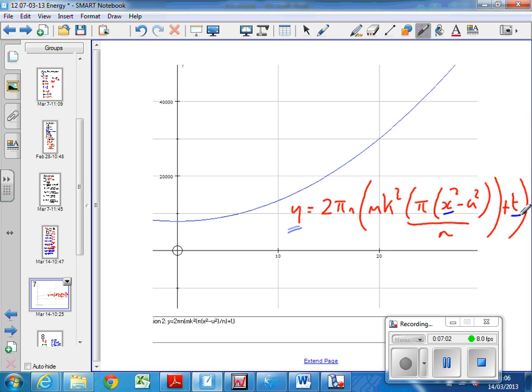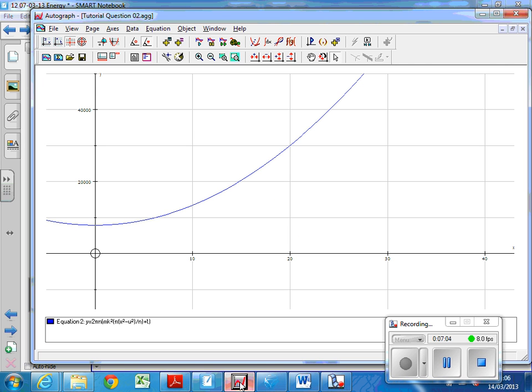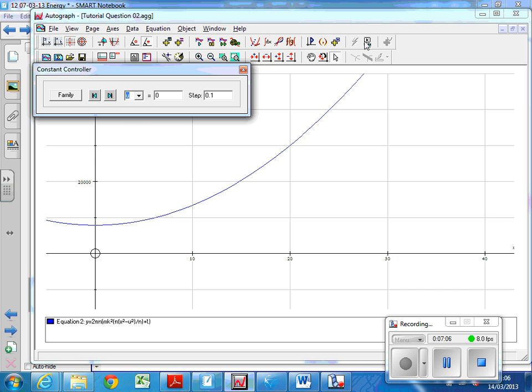So if we go back to Autograph, that's this function. And if you bring down the constant controller, we can change the values for any of the values we put in. So if I wanted the mass 125, which is what we were given. What's the radius of gyration? 0.15, which is what I was given, and so on. So I get the values to be what they need to be.